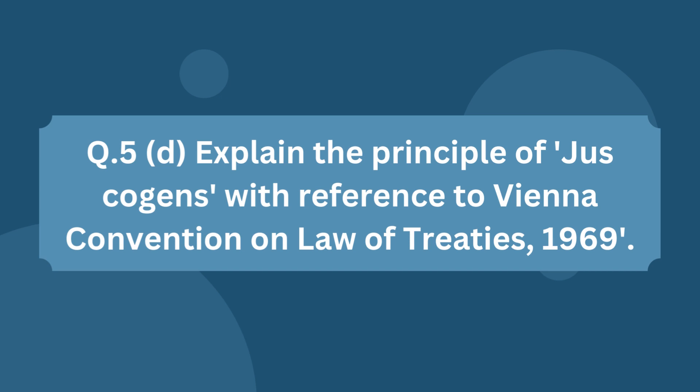The next question asks you to explain the principle of jus cogens with reference to the Vienna Convention on the Law of Treaties of 1969. Again a direct question — first explain the principle of jus cogens, then discuss Articles 53 and 64 of the Convention. That is all that has to be written.